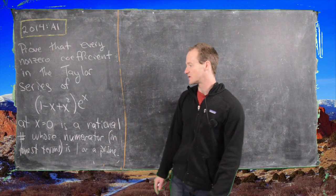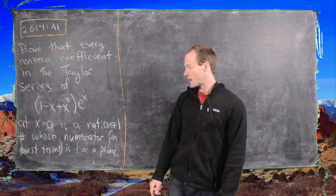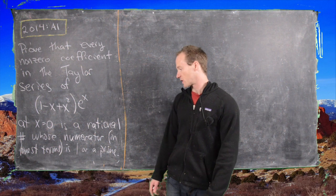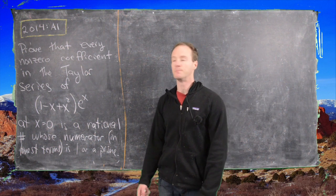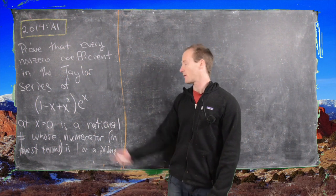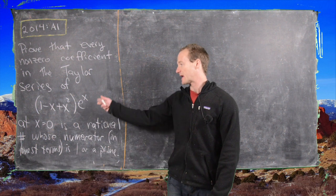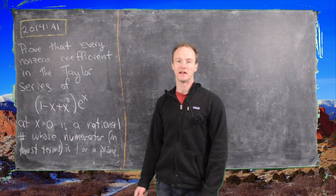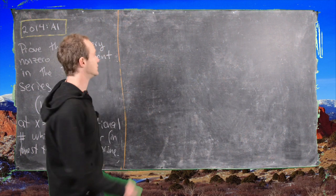is a rational number whose numerator, when taken in lowest terms, is 1 or a prime. This is a fairly simple problem once you expand it out in terms of the Taylor series of e to the x, and let's see how to do that.